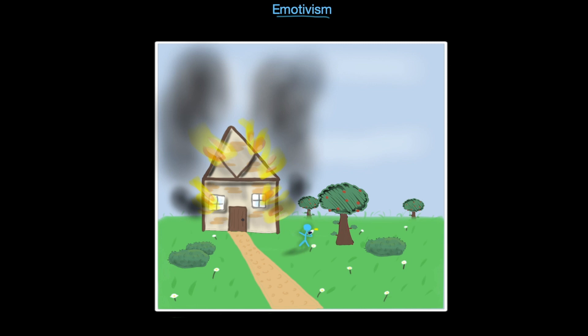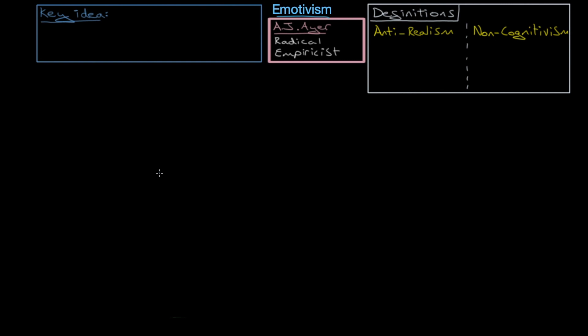So, whilst we might use the words 'arson is wrong,' all we're really doing is saying 'boo, arson.' Which is why emotivism is often called the boo hurrah theory.